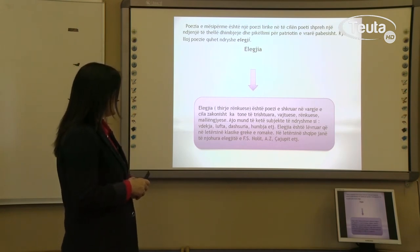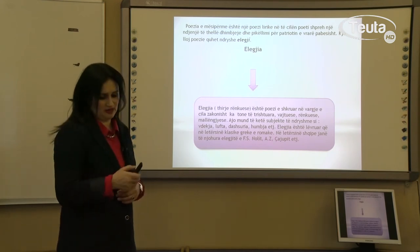Elegji: poezi e trishtuar, vajtuse, rënkuese, malëngjyese. Ajo mund të ketë subjekte të ndryshme si vdekja, lufta, dashuria, humbja e tjerë. Elegja është zhvilluar që në letërsinë klasike greke e romake. Në letërsinë shqipe janë të njohura elegjitë e Fan Stylian Nolit, Andon Zako Çajupit e të tjerëve.